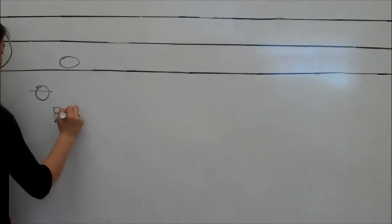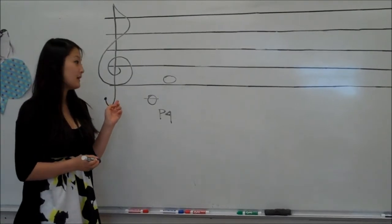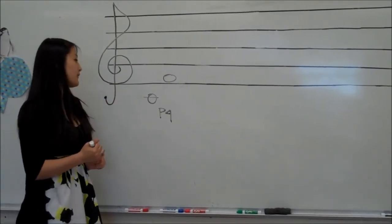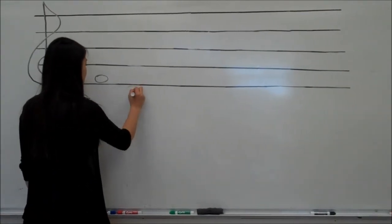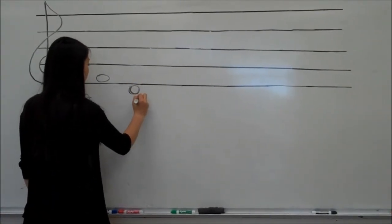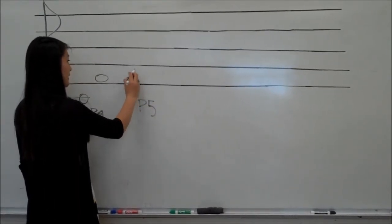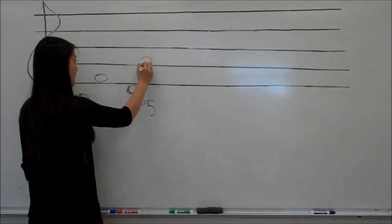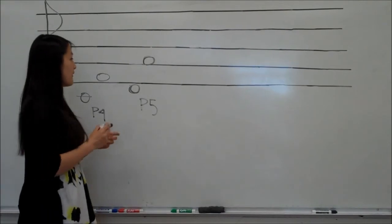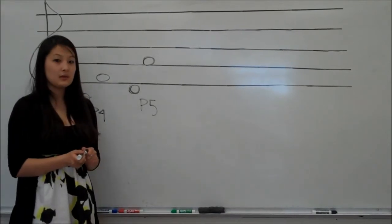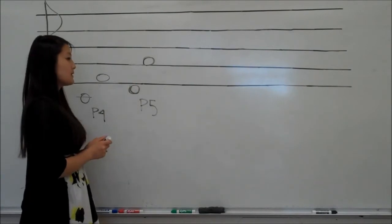You know this because in the key of C, there is an F natural in that key. For another example, you could do a D and then count up five to make it a perfect fifth — one, two, three, four, five — to an A. You know that this is perfect because there are five letter names between these two notes, and also A natural is in the key signature of D.